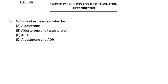Next question: volume of urine is regulated by — we know aldosterone is a hormone that regulates urine flow, and ADH (vasopressin or anti-diuretic hormone) also plays a role in regulating the volume of urine. The first option is aldosterone only; the second is aldosterone and testosterone.